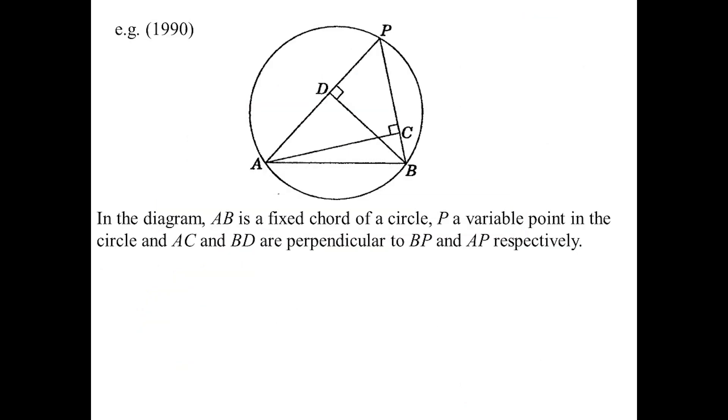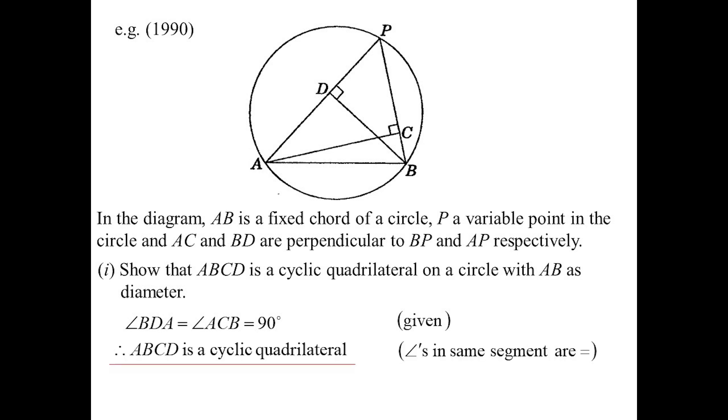Let's have a look at our past paper question from quite some time ago. We've got a fixed chord, so AB is not going to move, P could go anywhere on that arc, and we're told AC and AD are perpendicular to those respective lines. The first part was a rolled standard - show it's a cyclic quad. They've told me BDA and ACB are both 90 degrees, so therefore the angles in the same segment are equal.